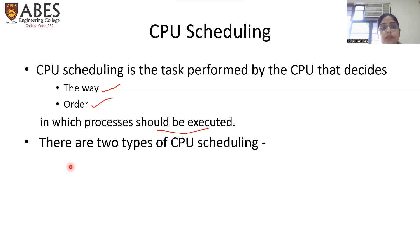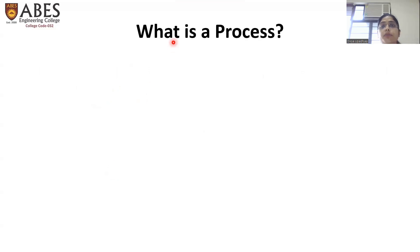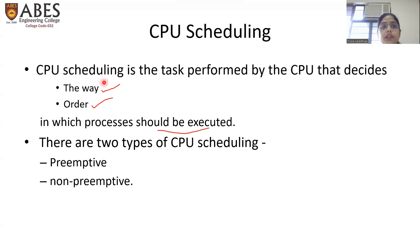There are two types of CPU scheduling: preemptive and non-preemptive scheduling. We will discuss these two topics in the later part of this lecture. Before going forward to the CPU scheduling criteria and algorithm, let us discuss what a process is — because CPU scheduling decides the way and order in which processes will be executed, so we need to understand what a process is and why it is required to design a particular order for execution.